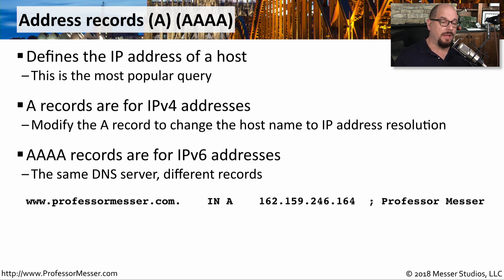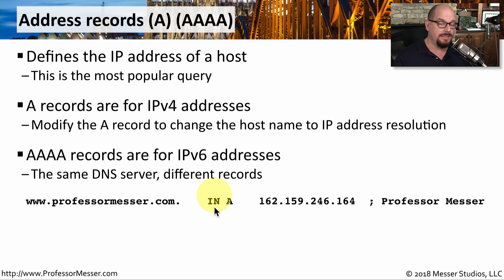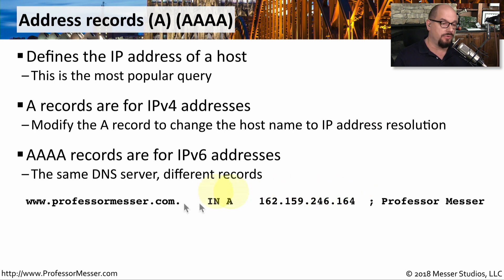Here's an example of an A record. I have the name www.professormesser.com. There's also a specification of the class of this record — for most of us, the class will be the internet class. This is an A record, so this will be an IP version 4 address, and you can see the IP version 4 address is included as part of this record that associates this IP address with www.professormesser.com. You can also add a semicolon at the end of the record to designate a comment so that you can add other context to this particular record.